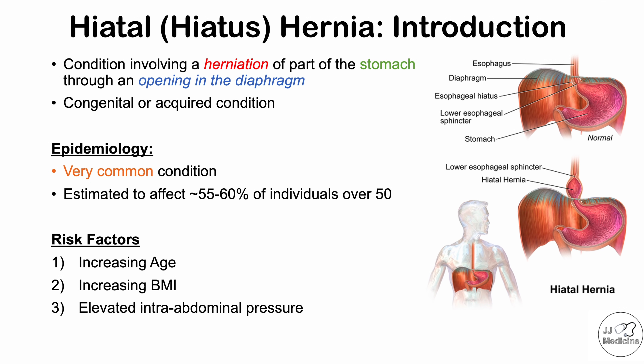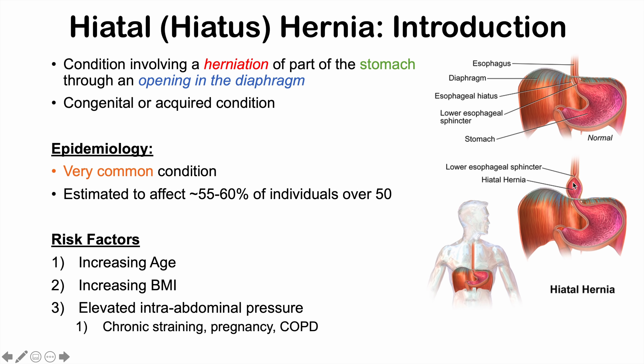Related to this is elevated intra-abdominal pressure. Causes include increasing BMI, but also chronic straining — such as chronic constipation or chronic vomiting — anything that applies a lot of pressure inside the abdomen can push part of the stomach through the esophageal hiatus. Pregnancy is another cause as it increases intra-abdominal pressure. Chronic obstructive pulmonary disease, or COPD, with chronic cough can also herniate part of the stomach through the esophageal hiatus. Smoking is also another risk factor.